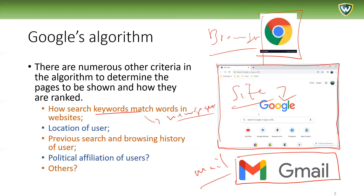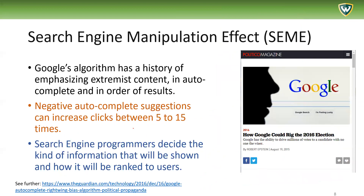Now, whether political affiliation is used gets a little bit more complicated and controversial because it's more difficult to analyze. The point is that these algorithms are opaque — we don't know what's going on, how they search, how they function, or how they're controlling the information we see. There is some evidence that these algorithms are biased. In particular, Google's algorithm has a history of emphasizing extremist content in autocomplete and in how results are ordered — building on existing inequalities and conflicts, leading into pernicious or vicious feedback loops.